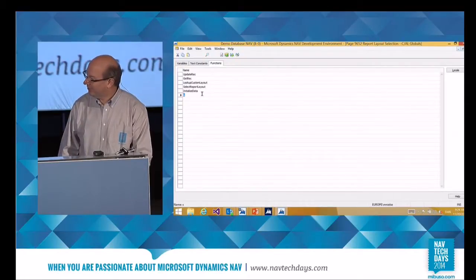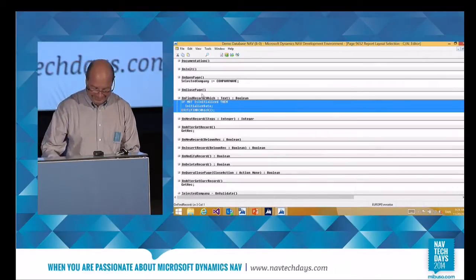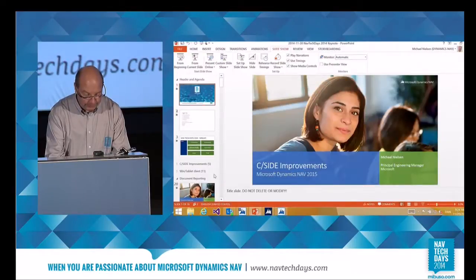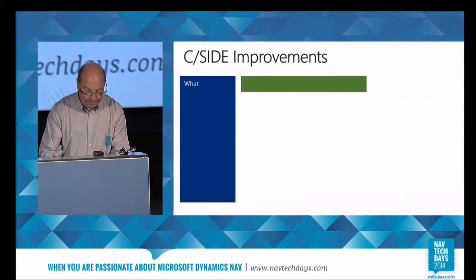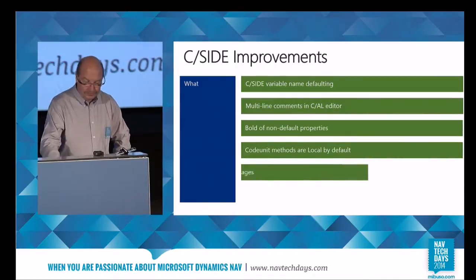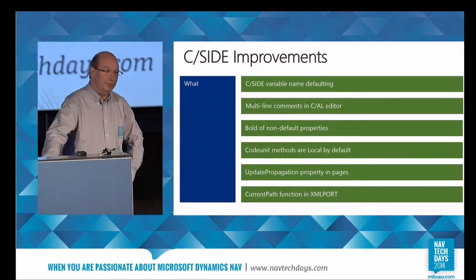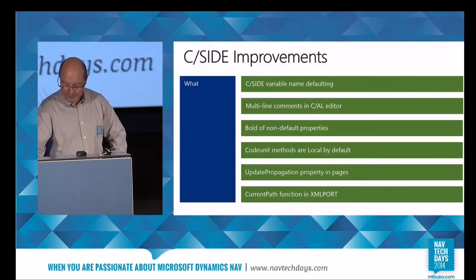We spent two months in Seaside, all of us. Beyond that, we actually started using XML port internally for real production code, and some annoying thing is that you sometimes need the current path in there. You can create that yourself using C/AL, but now there's a function to get that at your hands to write your code.